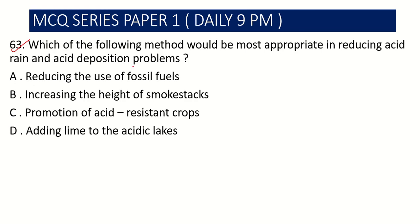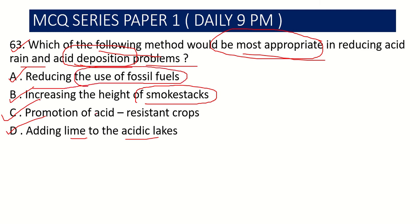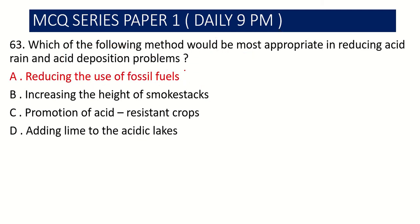Question number 63: Which of the following methods would be the most appropriate in reducing the acid rain and acid deposition problems? Option A: reducing the use of fossil fuels, Option B: increasing the height of smokestacks (chimneys), Option C: promotion of acid-resistant crops, Option D: adding lime to acid lakes. The best option is reducing the use of fossil fuels, so Option A is the correct answer.